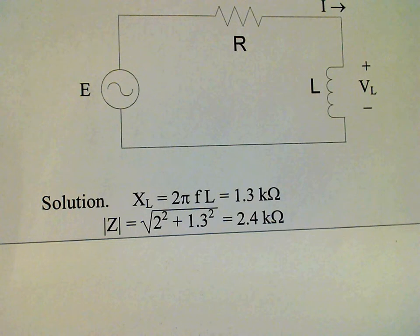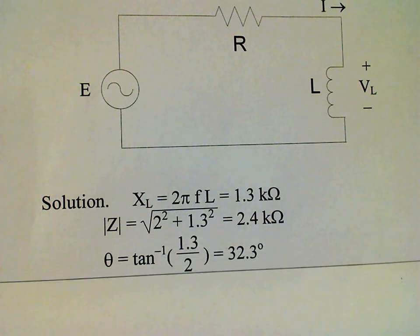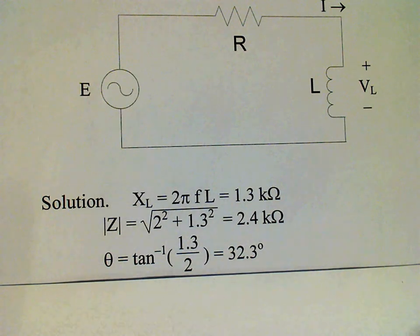The phase angle we get by inverse tangent of reactance over resistance, and we come up with 32.3 degrees.